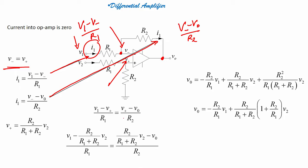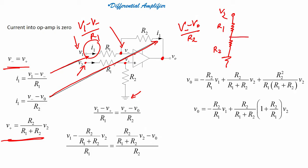Now, what is V plus? To measure V plus, you have to consider this as a potential divider. V plus will be R2 divided by (R1 plus R2) into V2 — because V2 is the voltage source and there is a ground, so V plus equals R2 divided by (R1 plus R2) into V2.